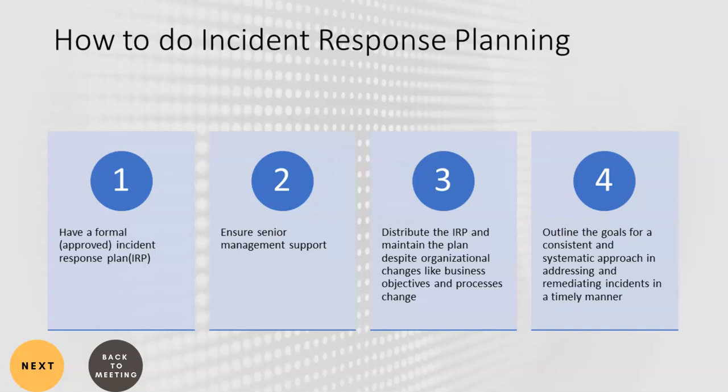When planning incident response, we can divide the whole process into four parts. First, we need a formal, approved, documented incident response plan with senior management support. Second, distribute the IRP to everyone who has a role in the incident response process. Third, update the IRP whenever there are business or process changes. Fourth, the IRP should cover the goals of incident response and a systematic approach to address incidents in a timely manner.